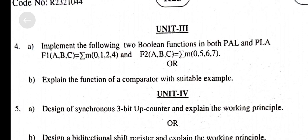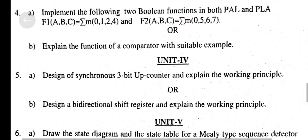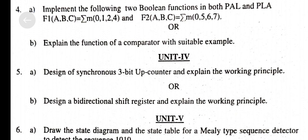Unit 3, Question A: Implement the following two Boolean functions in both PAL and PLA — F1 = ABC(0, 1, 2, 3, 4) and F2 = ABCm(0, 5, 6, 7). Question B: Explain the function of a comparator with a suitable example.